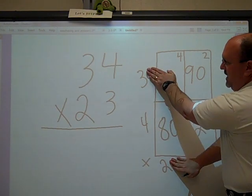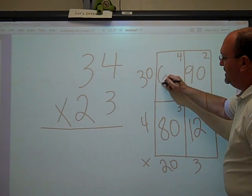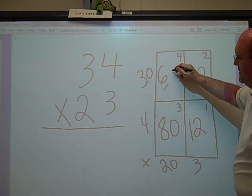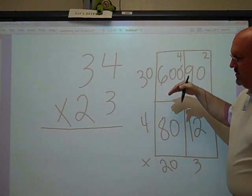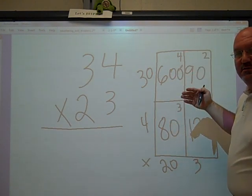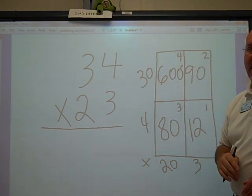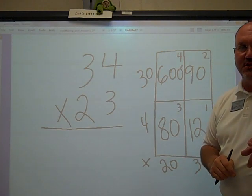Then we have 2 times 3 is 6. We have a 0 here, and a 0 here. Now all we have to do is add these numbers together to get our product. Remember, the product is the answer to a multiplication problem.